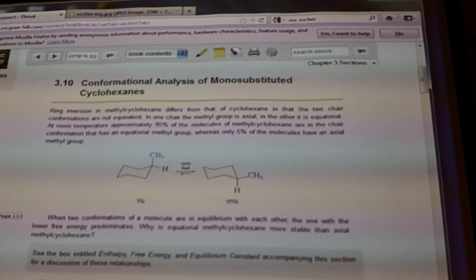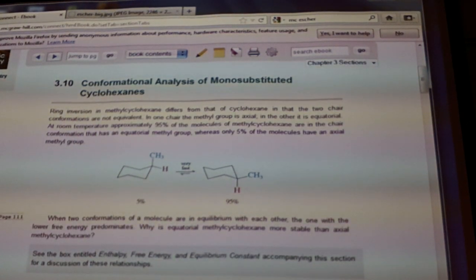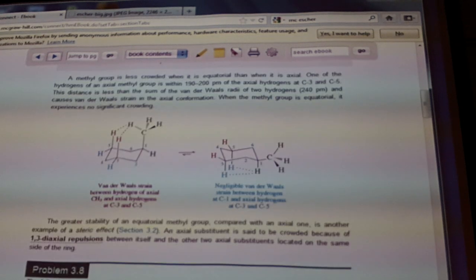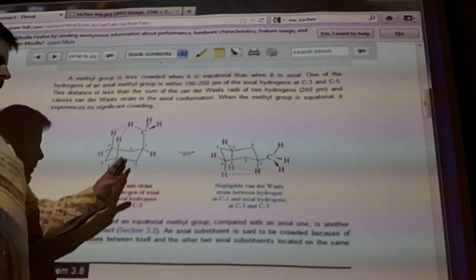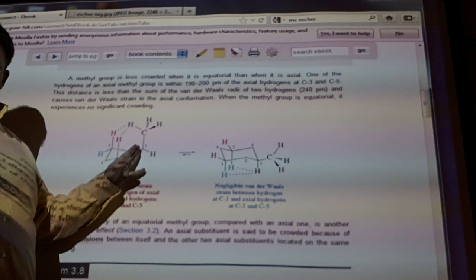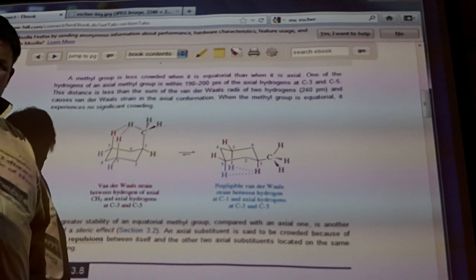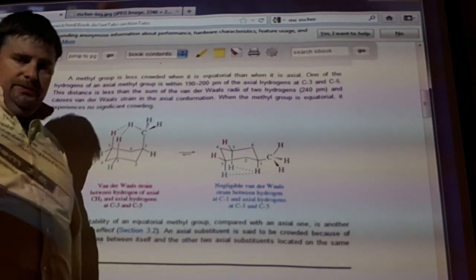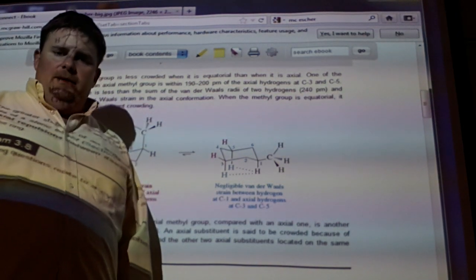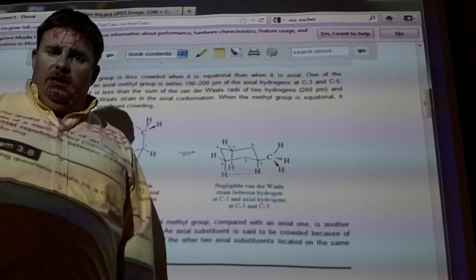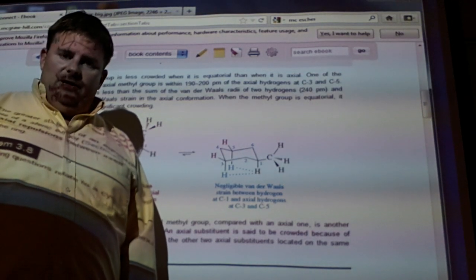Remember those diaxial interactions I taught you? Those are the ones that have a definite impact on what's happening here. Now, if you look at these two drawings here, this is the axial position. This is doing an eclipsed interaction with each one of these hydrogens. And when you have that kind of eclipsed interaction, that's going to be bad, especially if something is the size of methyl.